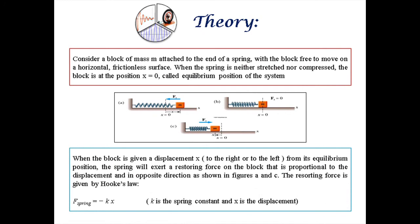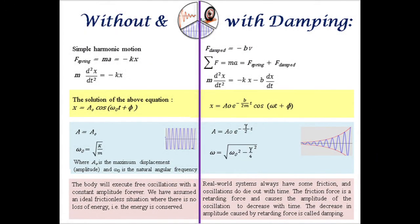Consider a block of mass m attached to the end of a spring, with the block free to move on a horizontal frictionless surface. When the spring is neither stretched nor compressed, the block is at its equilibrium position. When the block is given a displacement x from its equilibrium position, the spring will exert a restoring force proportional to the displacement and in the opposite direction. The restoring force is given by Hooke's Law: F equals minus kx. A system that behaves in this way is said to exhibit simple harmonic motion.